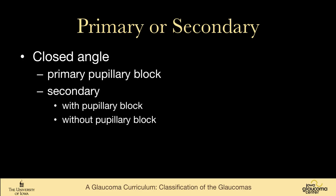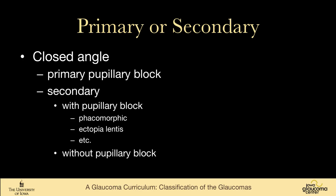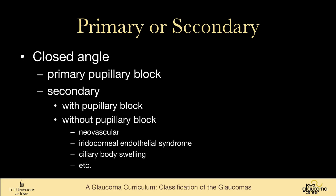In closed angle glaucoma, you can have primary pupillary block angle closure, or secondary glaucomas either with pupillary block — in which case a laser iridotomy should be beneficial, such as phacomorphic or ectopia lentis — or without pupillary block, where laser iridotomy would not be helpful, such as neovascular glaucoma, ICE syndrome, ciliary body swelling, etc.